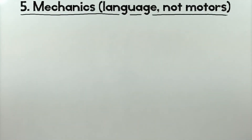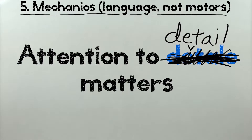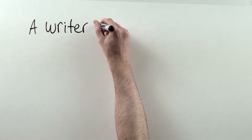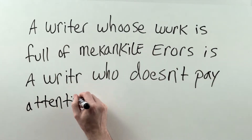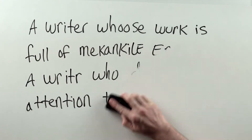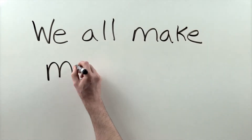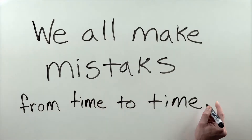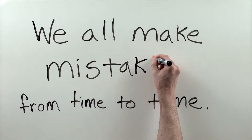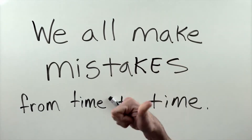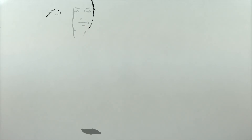5. Mechanics. Little things like spelling and punctuation count — they show attention to detail. A writer whose work is full of mechanical or grammatical errors is a writer who doesn't pay attention to detail, or who's maybe working way too fast. Either way, not a confidence builder. Sure, we all make mistakes from time to time, that's normal. Serious and widespread mistakes, however, aren't. Writers are professionals, and a big part of their job is to communicate effectively. If they leave a lot of obvious errors in their work, they're not doing their job all that well, so you have to wonder what other mistakes they're making.